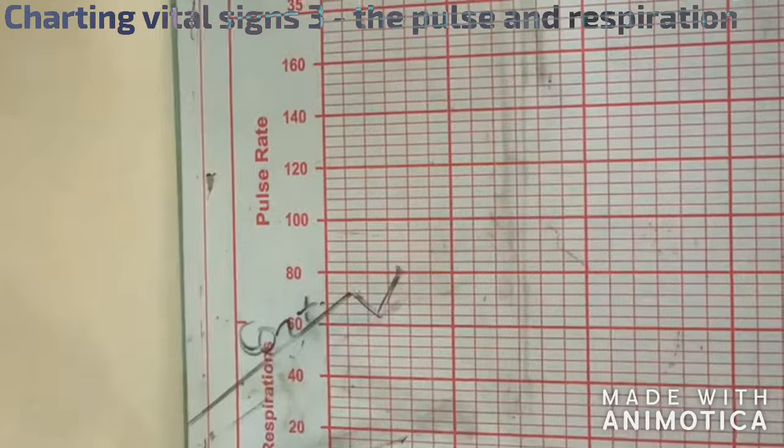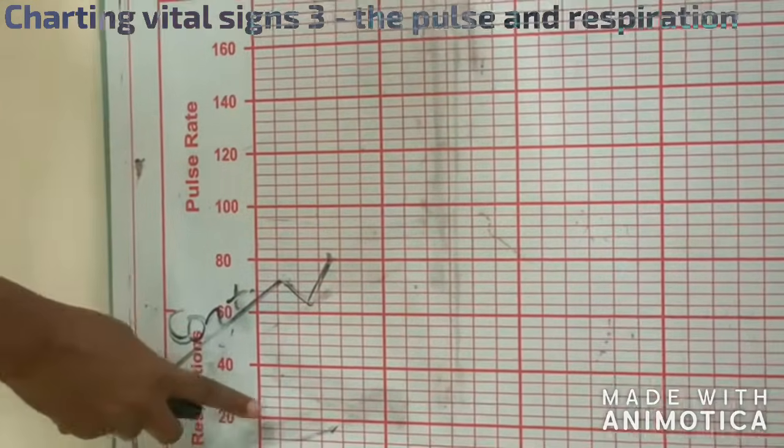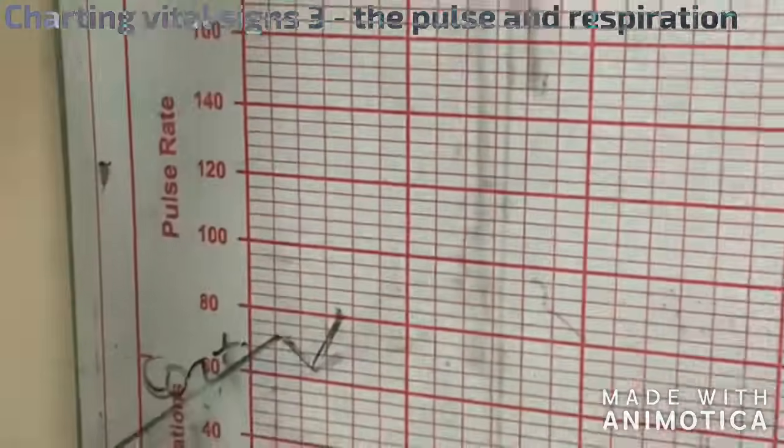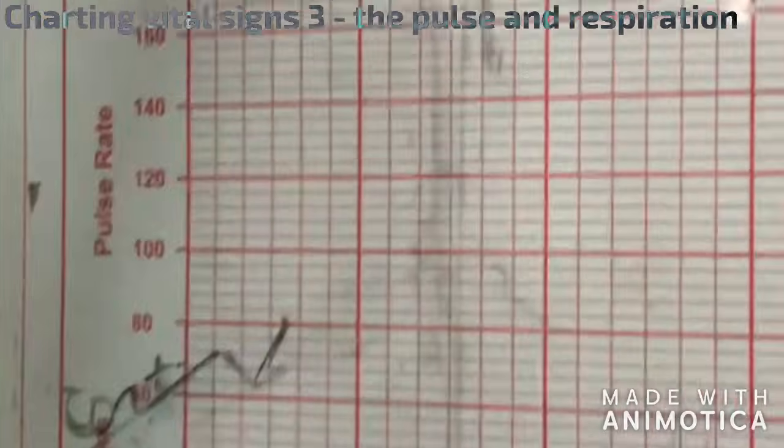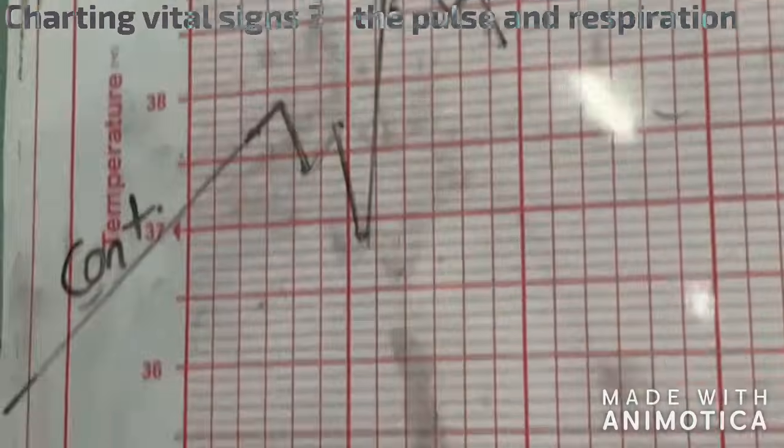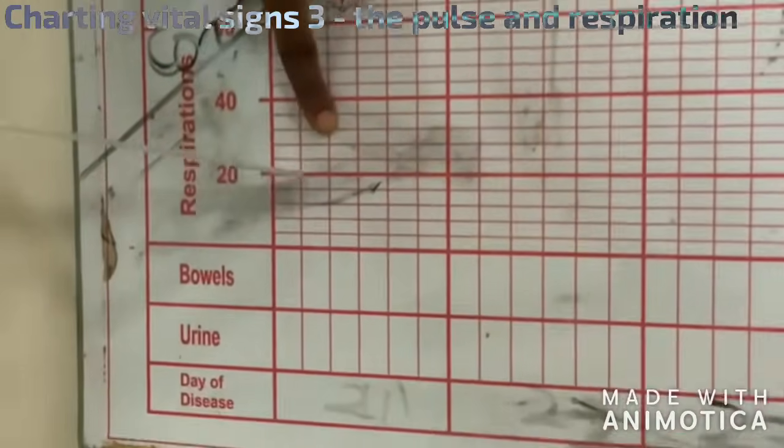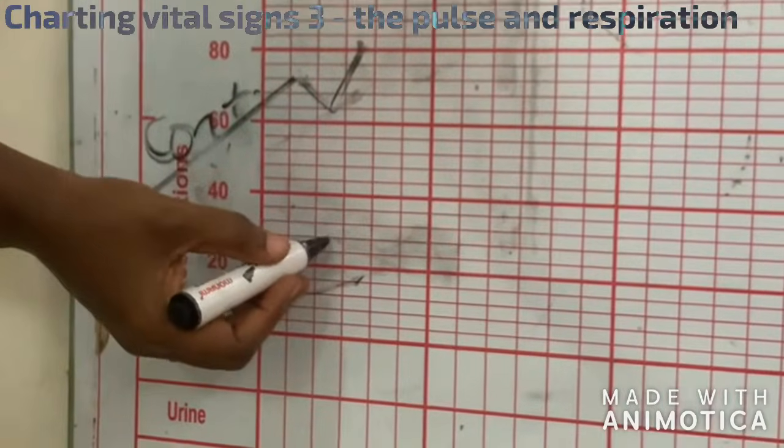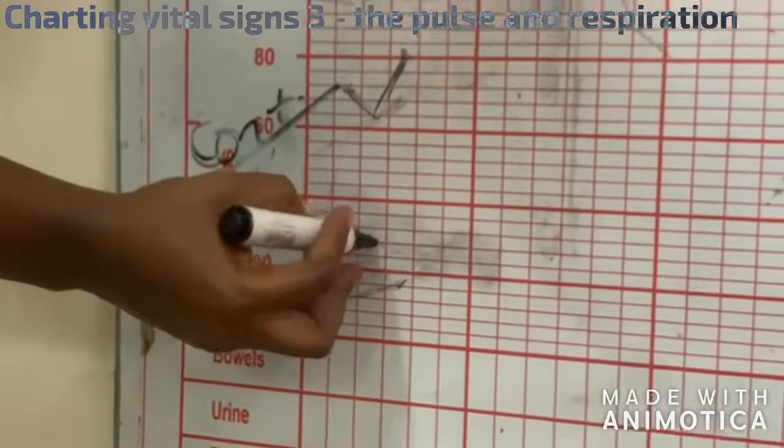The same thing for respiration. If the patient's respiration is 28 at 10 a.m., you look for 10 a.m., trace it down and meet it with 20. So this is 20, 24, 28. Yes, this is 28.